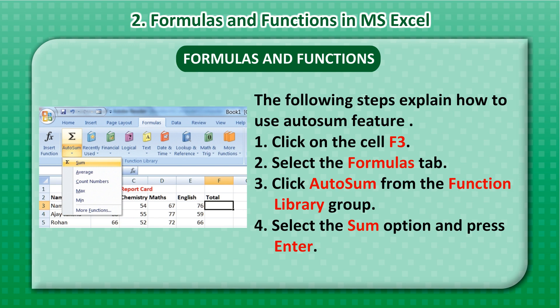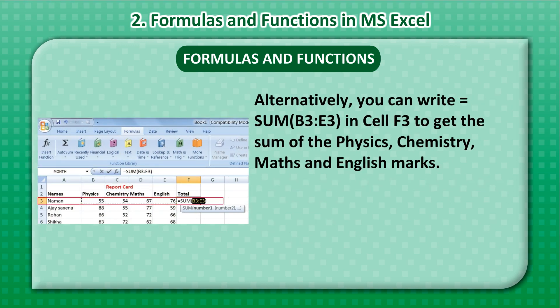Step 1: Click on cell F3. Step 2: Select the Formulas tab. Step 3: Click Autosum from the Function Library group. Step 4: Select the Sum option and press Enter. Alternatively, you can write =SUM(B3:E3) in cell F3 to get the sum of the Physics, Chemistry, Maths, and English marks.